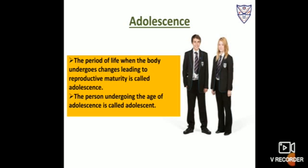Let us discuss about adolescence. The period of life when the body undergoes changes leading to reproductive maturity is called adolescence. Boys and girls who are undergoing these changes are called adolescents, or we can say teenagers. The period of adolescence covers the teens, that is thirteen to eighteen or nineteen years of age.